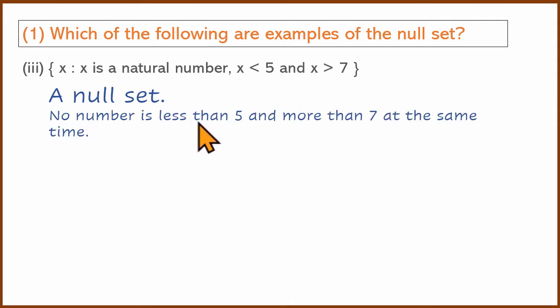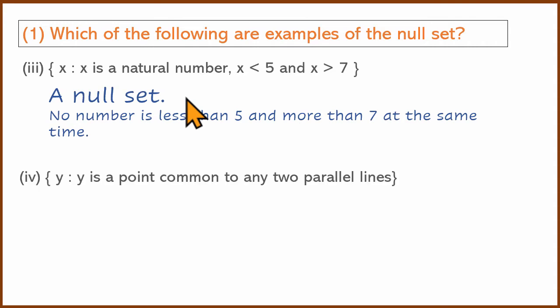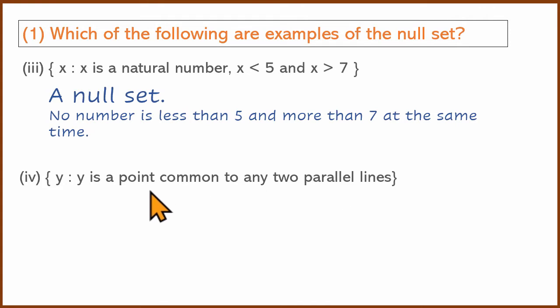No number is less than 5 and more than 7 at the same time. That's the null set. Fourth question: Here are two parallel lines. Common point — this set. But parallel lines do not meet again. That's the null set.